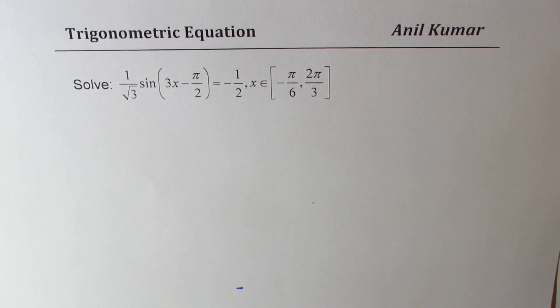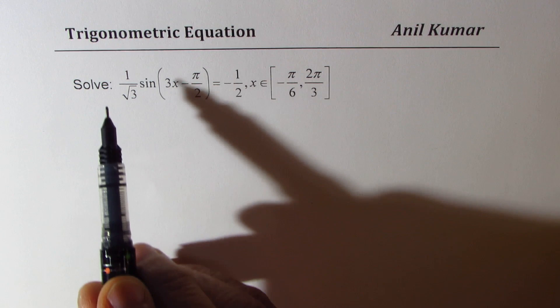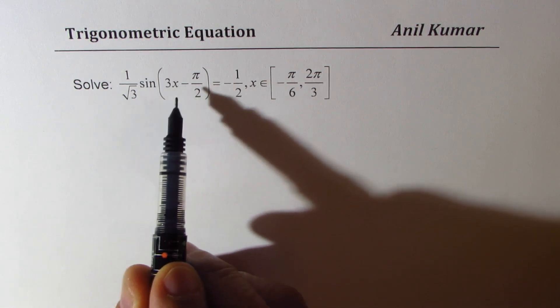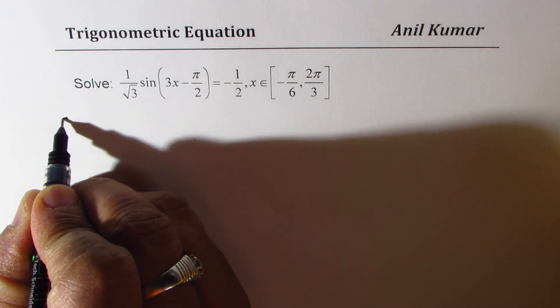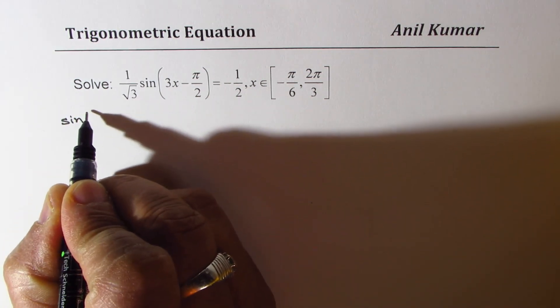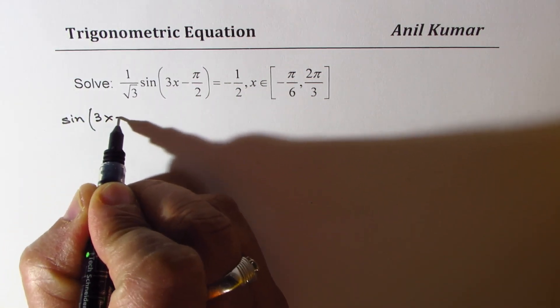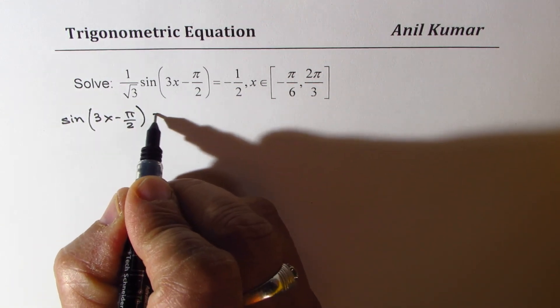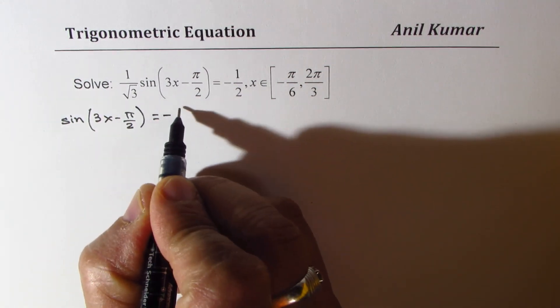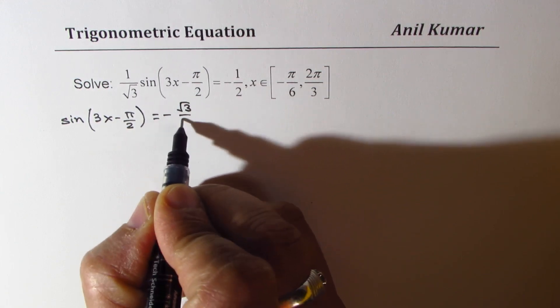Let us first understand our equation. When we write 1 over square root 3 sine of something equal to minus half, we can rewrite this as sine of 3x minus pi by 2 equal to minus square root 3 over 2.